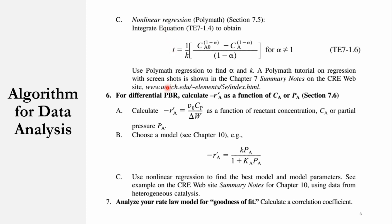For a differential PBR, we will calculate -r'A as a function of CA or PA, which is section 7.6. Once we proceed, we calculate -r'A = (v0·dCA/dW) or that is actually the flow rate divided by delta W, as a function of reactor concentration CA or partial pressure PA. Then choose a specific model, which is chapter 10. So we will have to first study chapter 10 and then we have to come back here.